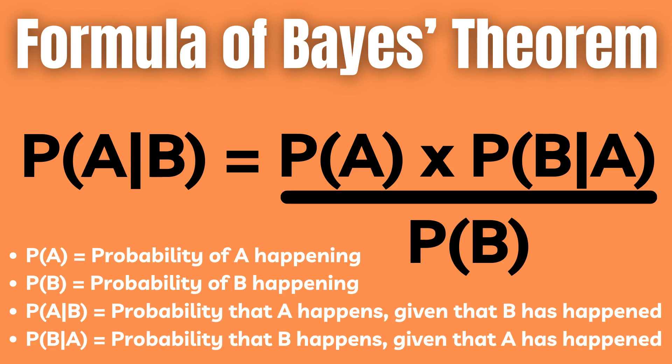Here, probability of A given that B is observed is how often A happens given that B happens, and probability of B given that A happens is how often B happens given that A happens. Then probability of A and B is just the likelihood of A versus B.